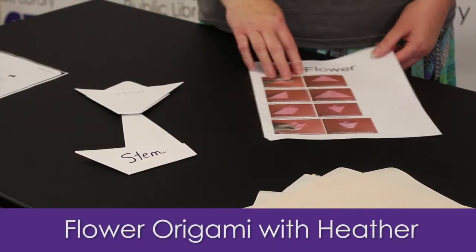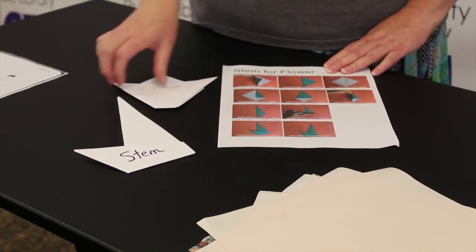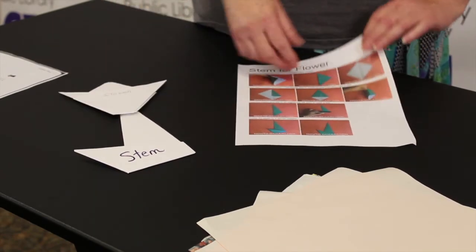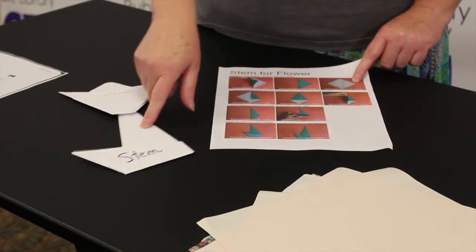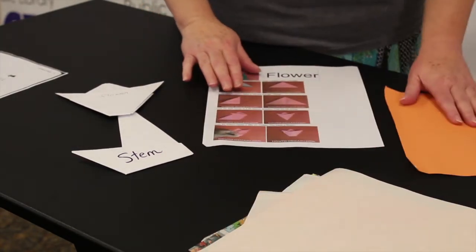Next we have a flower and a stem for the flower. Two separate pieces here. Now they used green for the stem and pink for the flower, but I'm going to use like a peach.